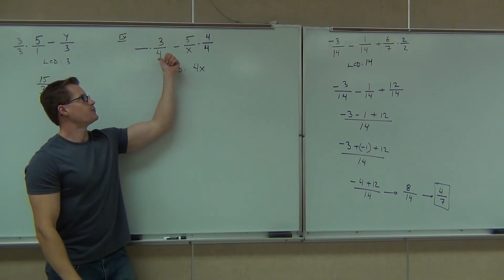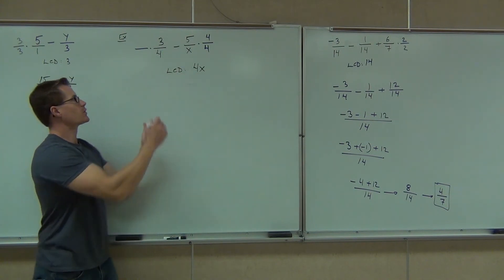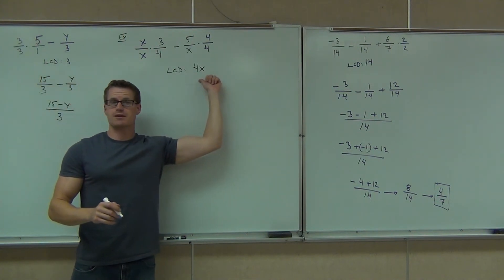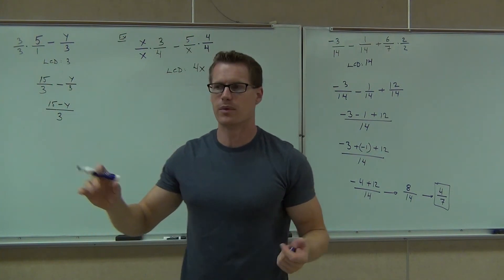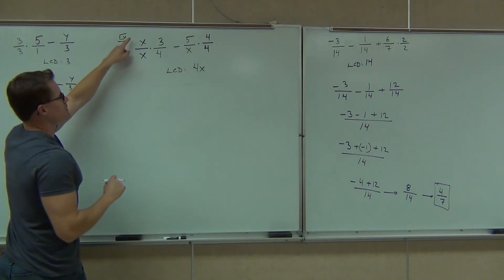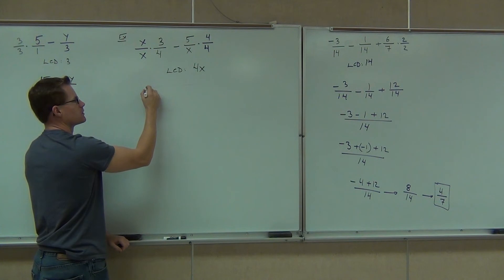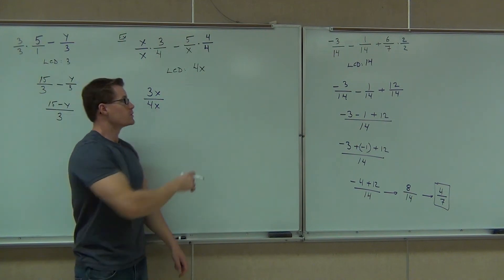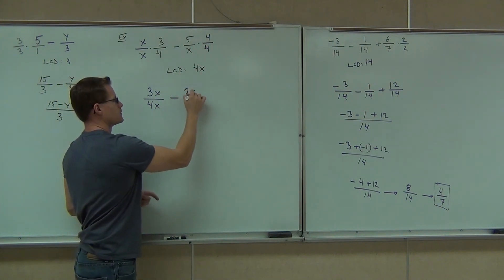Now, let's look over here. I've got 4. I want 4x. What am I missing? x. Multiply by x. Is x times 4 equal to 4x? Am I going to get that 4x that I want? Yeah. As long as you do both the top and the bottom, you're okay on this problem. Let's see what this is. This x over x times 3 fourths, how much is that going to give me? 3x. Good. We still have a minus sign. How much is this fraction going to give me? 20 over 4x. Good.